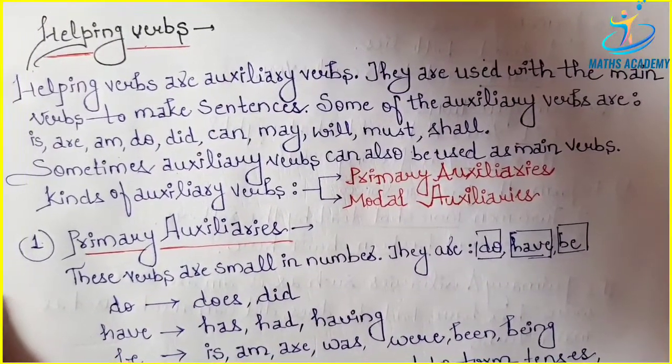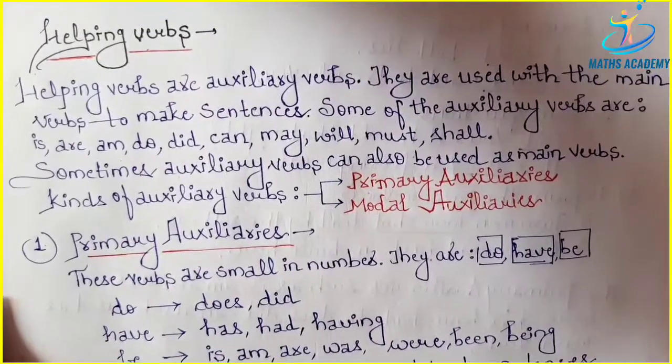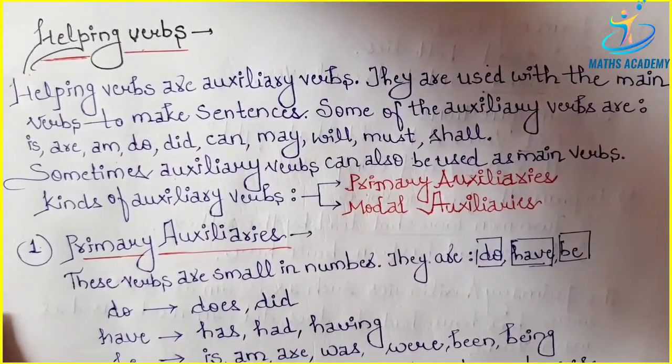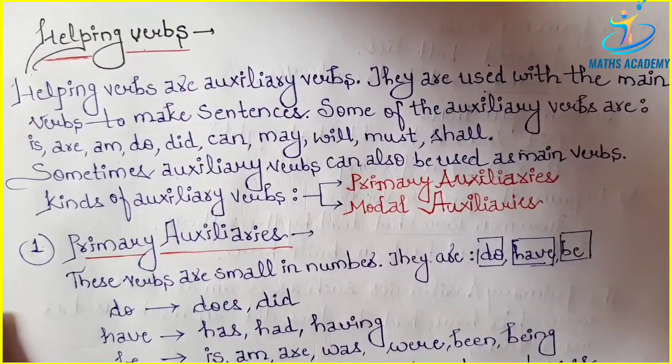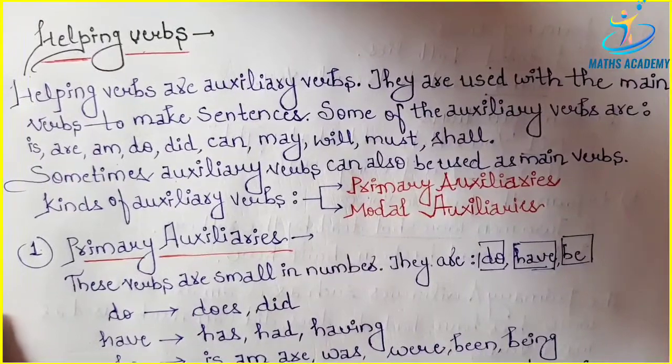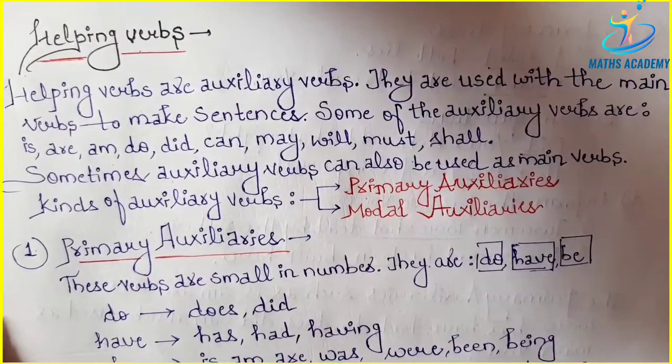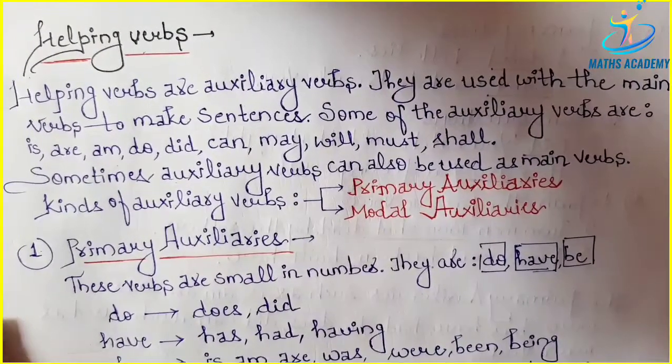Main verbs like is, am, are — these are the verbs used so that we can make a sentence. We call them helping verbs.